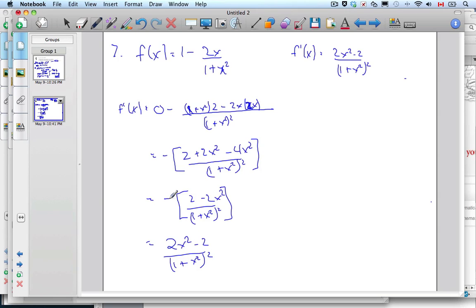That minus sign was a real killer. Part b says find the intervals of increasing and decreasing. To find these intervals, we need to find when the derivative equals 0. So I set f'(x) = 0, which means (2x² - 2)/(1 + x²)² = 0.